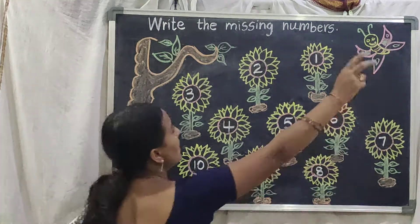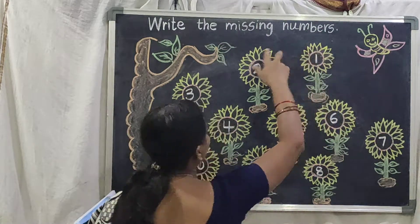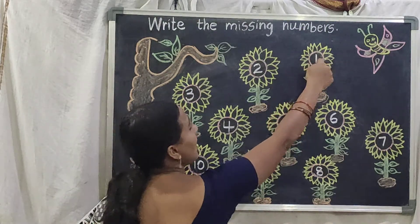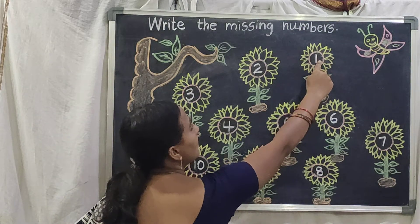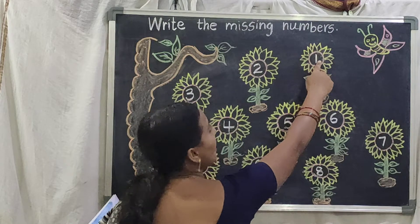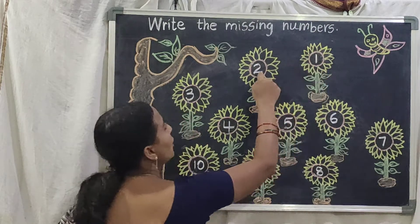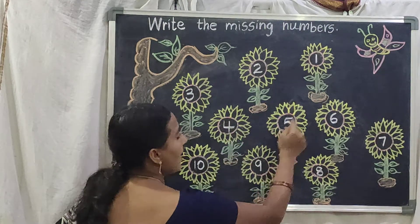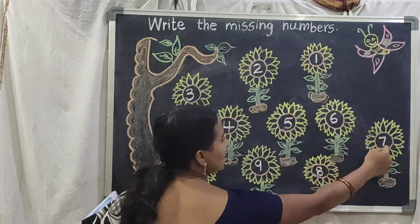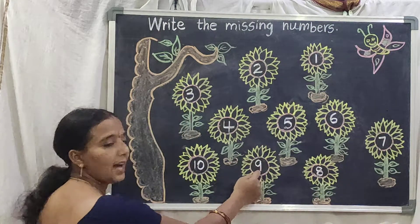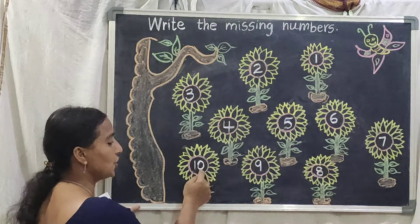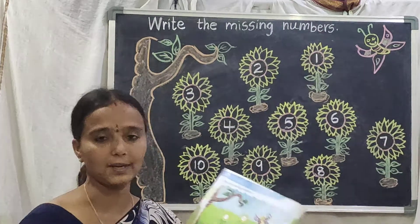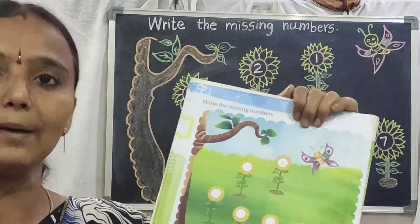Now let's count, children. See this beautiful butterfly is coming. Number 1 to 10 — count. Put your finger on the number and count it: 1, 2, 3, 4, 5, 6, 7, 8, 9, 10. Like this you should complete here up to 1 to 10 numbers.